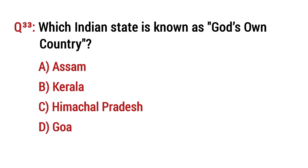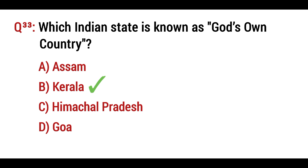Question number 33: Which Indian state is known as God's Own Country? The right option is B: Kerala.